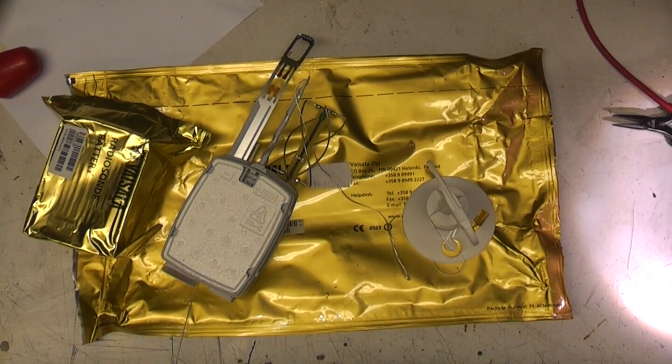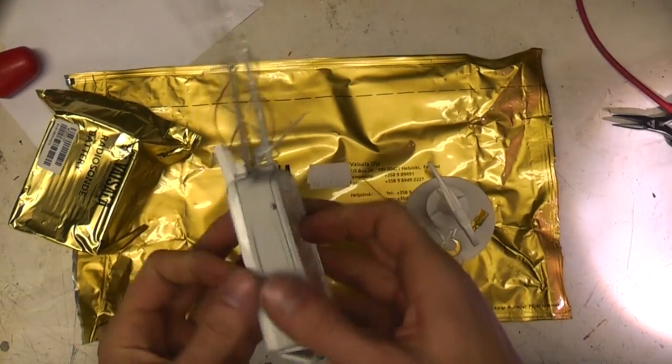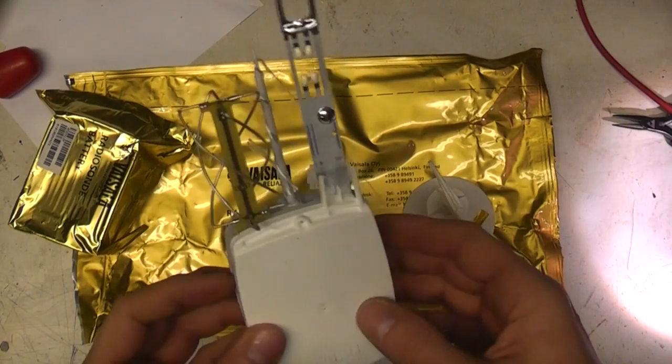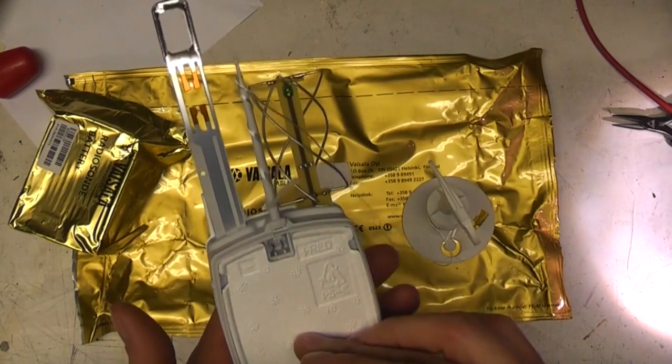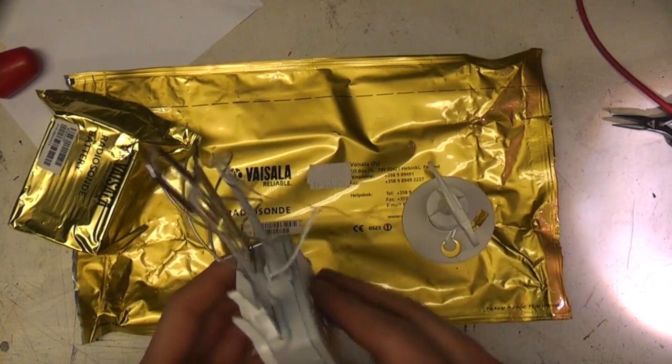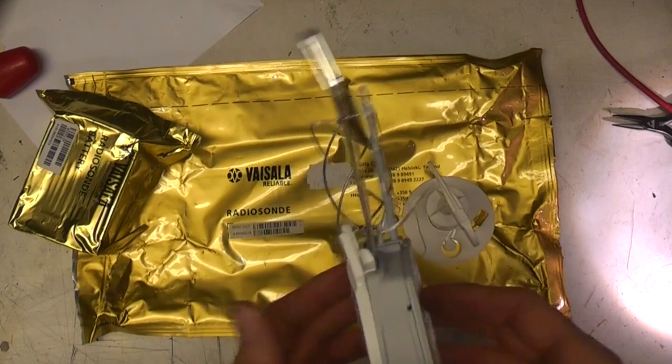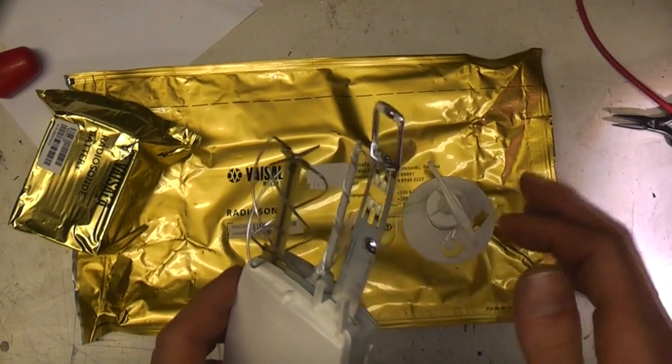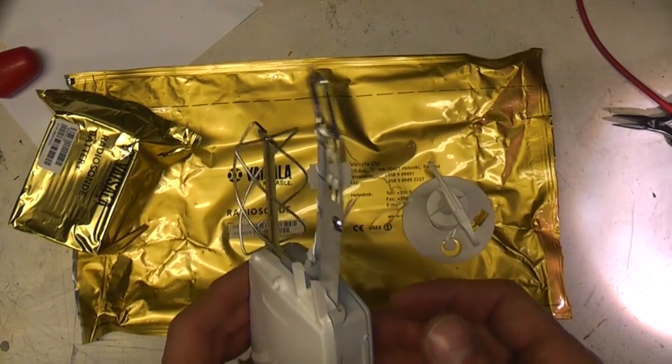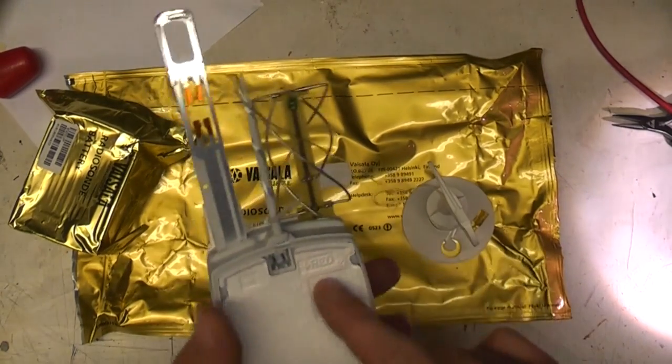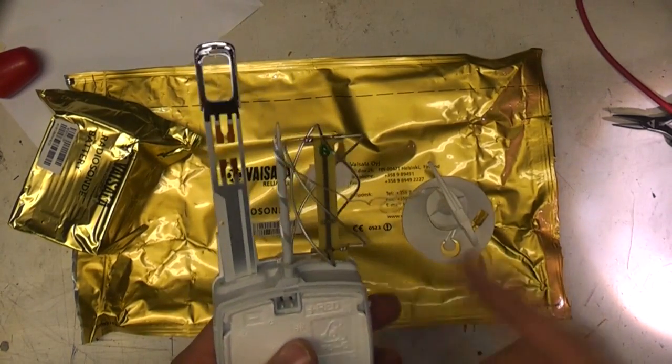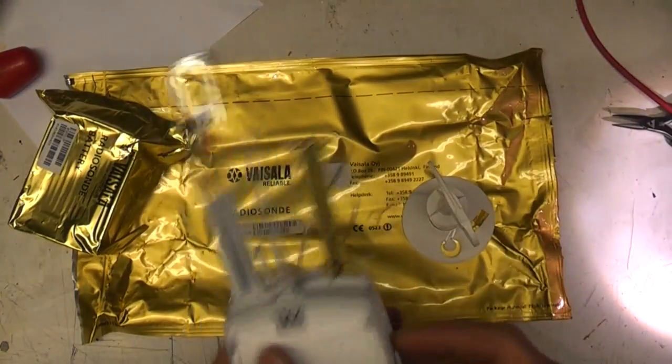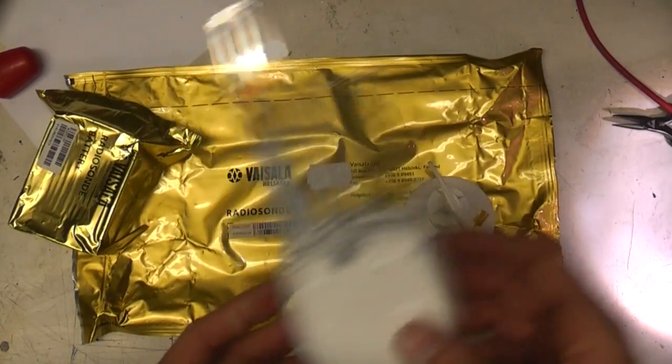Hi, teardown time again today. What we've got today is this - a radiosonde. These are used by meteorologists for measuring weather conditions. This thing is basically strapped onto a big helium or hydrogen balloon, sent up into the atmosphere, and it monitors temperature, pressure, wind speed, humidity, and then transmits that back. There's a GPS receiver in here to monitor both its position and also wind speed by the distance that it's moving.